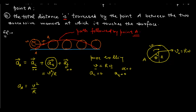Since this acceleration is the radial acceleration, its direction is towards the center of the wheel. With v = 1 m/s and r = 0.5 m, the magnitude is v²/r = 1²/0.5 = 2 m/s². That is the magnitude of acceleration of point A at any instant of time.